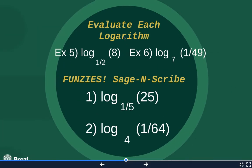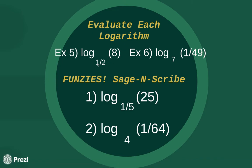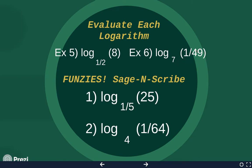Examples five and six are basically the same as the last problems. The only difference is that in these, the base of the logarithm is a fraction — fractions are our friends, but they require an extra step or two. Example five will have a fraction in the base and example six will have a fraction within the log. Pause the video and work examples five and six.